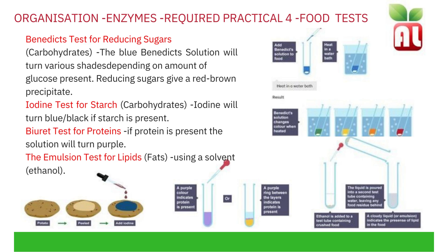We can use a number of different reagents to test for a specific food group. Carbohydrates are either starches or reducing sugars. Reducing sugars are tested using Benedict's reagent. Benedict's solution is blue and depending on the concentration of glucose present will give a red-brown precipitate.